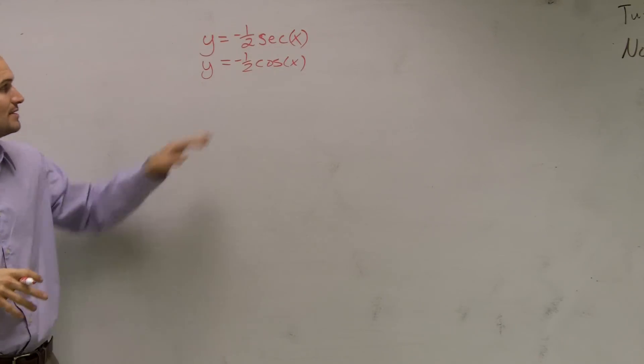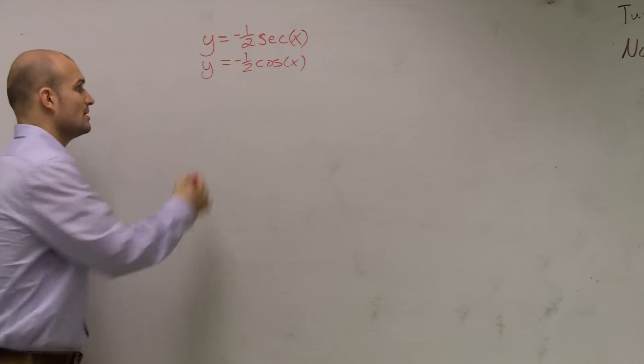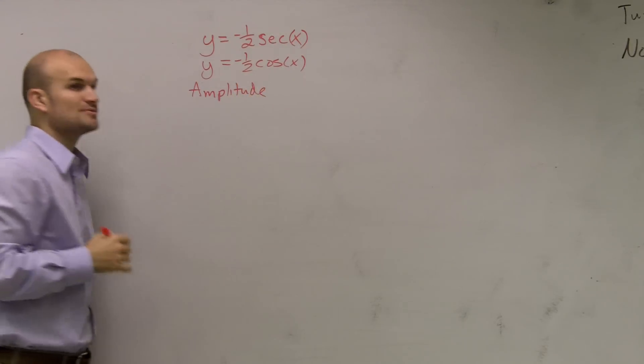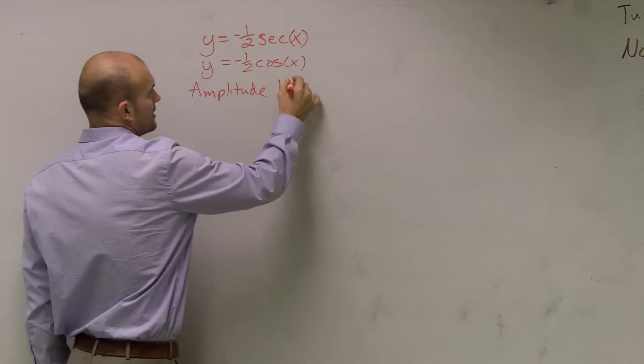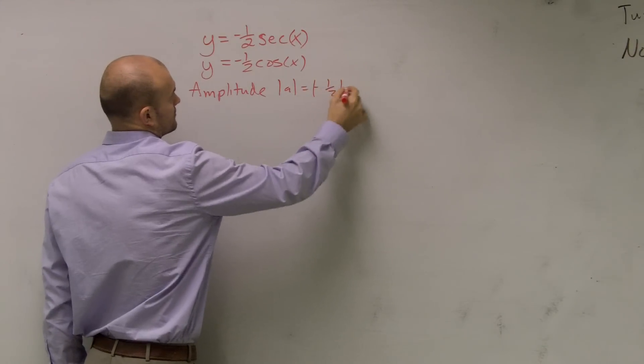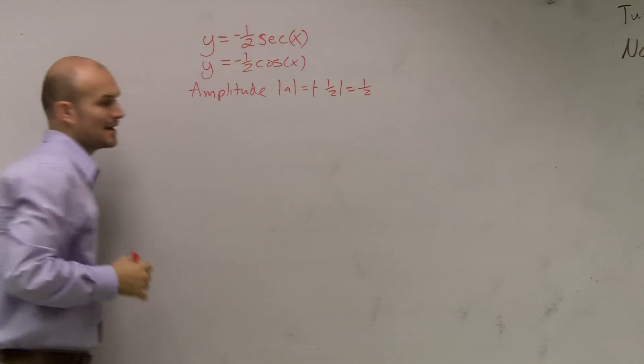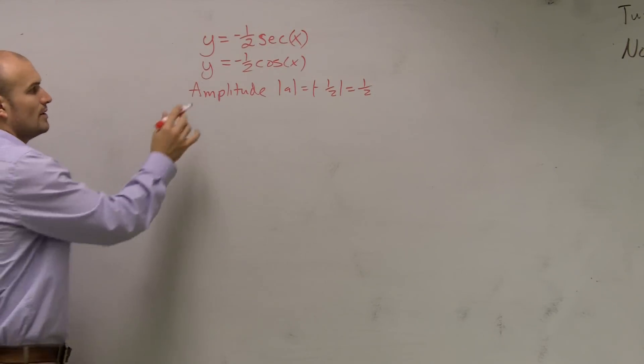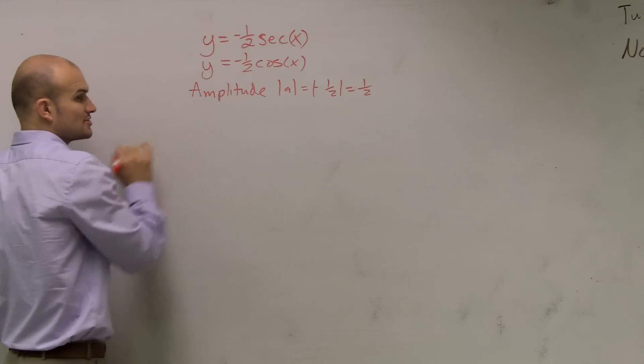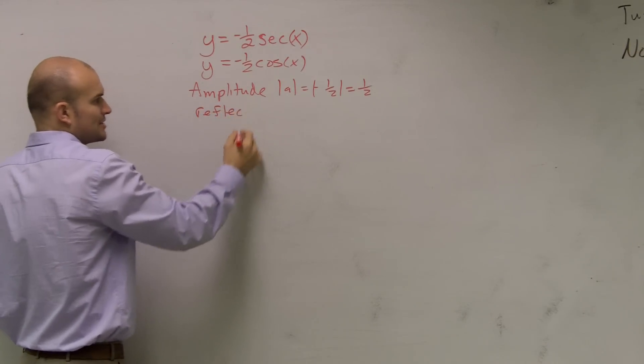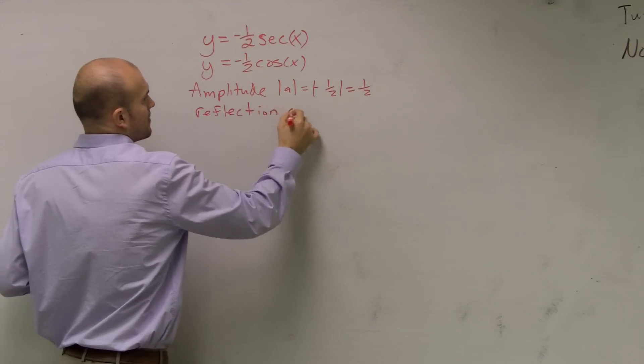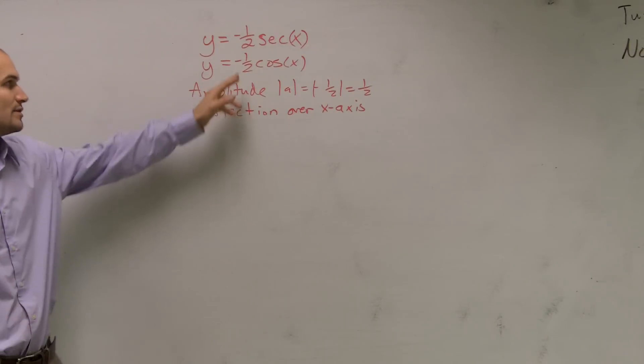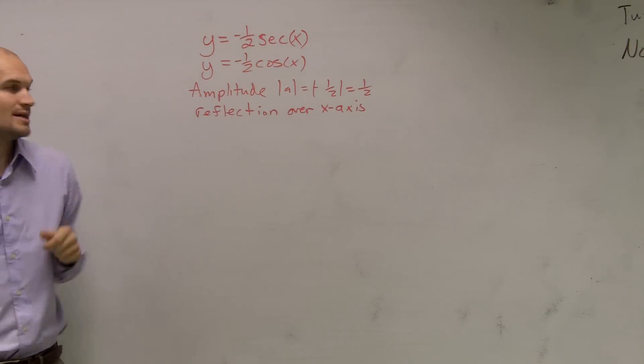First thing we do when we're having sine or cosine is look at our amplitude. The amplitude is the absolute value of a, which in this case is negative one-half. So my amplitude is going to be one-half. We also know it's a negative a, so we're going to have a reflection over the x-axis.